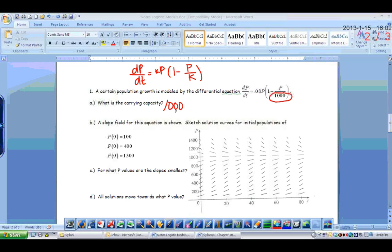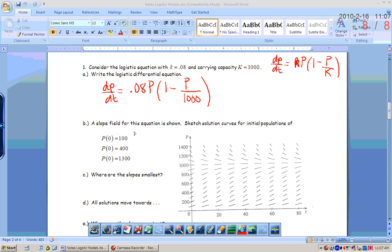It's not always going to be in this form, and in a couple of minutes we're going to have to put it into this form. But if you can get it into that form, then all you have to do to identify the carrying capacity is look at that denominator inside the parentheses of 1 minus p over a number.